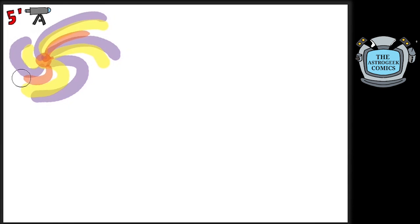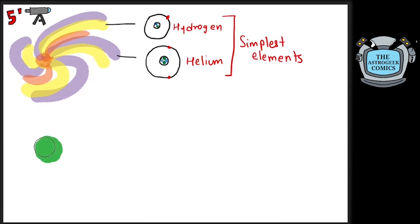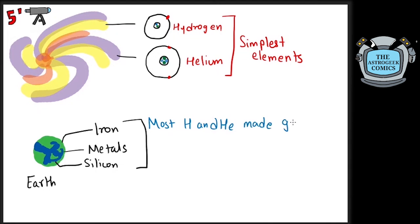So, to sum up, the most common elements in the universe are hydrogen and helium because they were created in large amounts and were the simplest to form. On Earth though, we mostly see metals because most of the hydrogen and helium was pushed away to form gaseous planets or combined to form compounds. I hope you enjoyed this video.